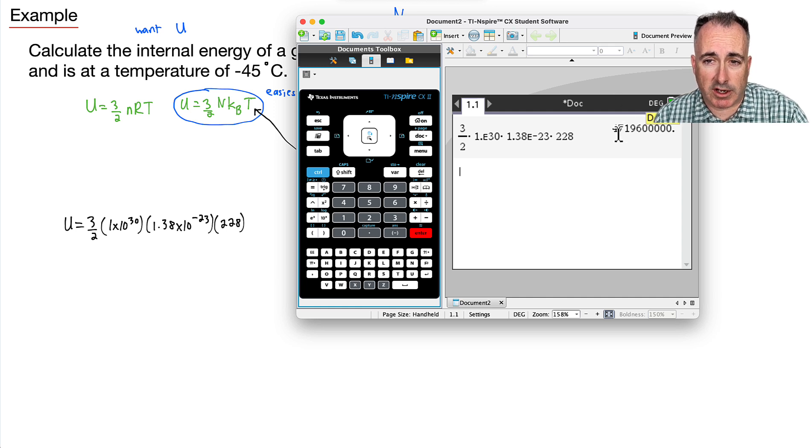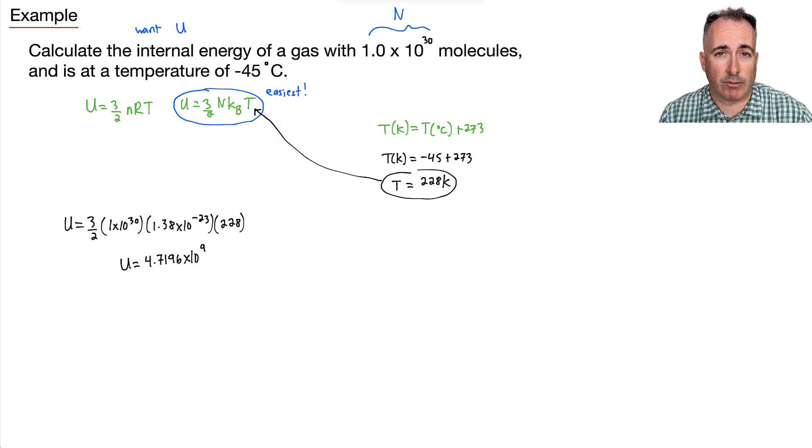Now, what is that in scientific notation? I can say it's 4.7196 times 10 to the 1, 2, 3, 4, 5, 6, 7, 8, 9. So I'll say it's 4.7196 times 10 to the 9. Okay, well, I can write my answer to two significant figures because that's the least ones that I've been given. So that means I can say then that U, the internal energy then is going to be 4.7 times 10 to the 9 joules.